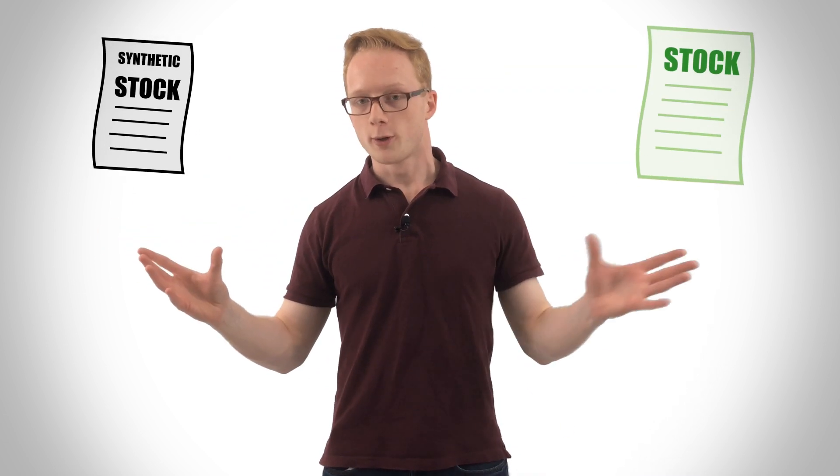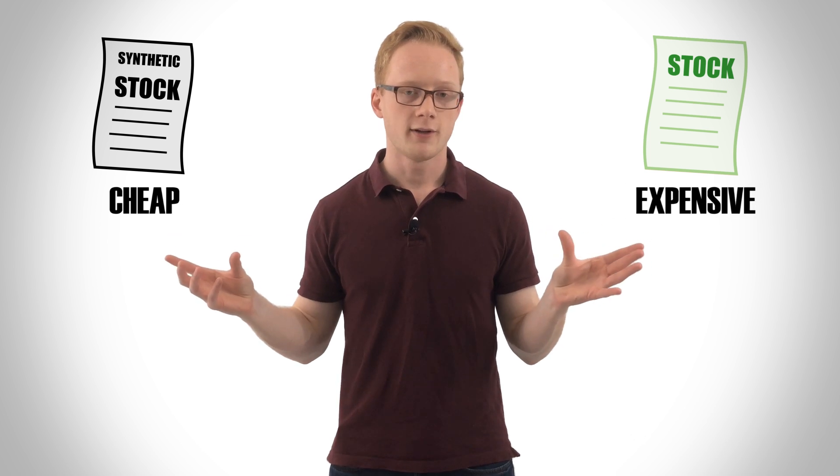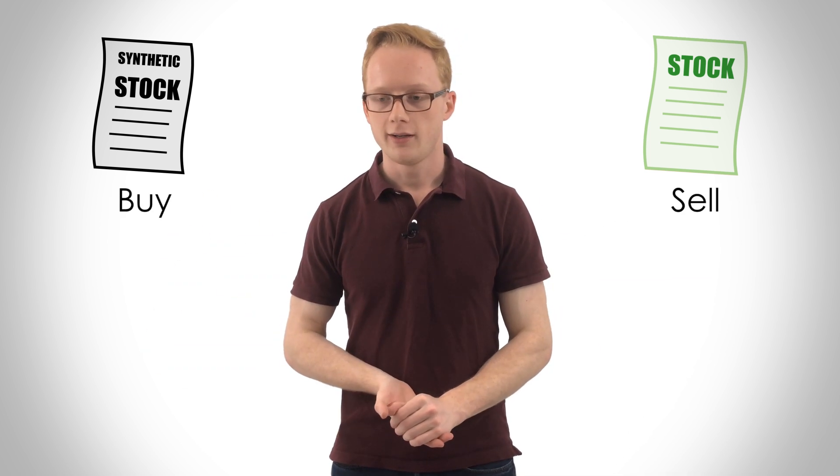Yeah, so I should have mentioned this in the video: synthetic stocks only last for the duration of the options. So because options are three months, six months, sometimes a year in length, once that time passes the option no longer exists. It's either exercised or it's expired. So that's a key differentiation because obviously a stock doesn't expire unless the company goes bankrupt. But again, like I mentioned in the video, the reason why people make these synthetic stocks is for arbitrage opportunity. If you have your synthetic stock and your normal stock and one's cheaper and one's more expensive, then you can buy the cheap one and sell the expensive one. It's an opportunity to kind of lock in a profit that way. But yes, you don't have this synthetic stock for a long period of time.